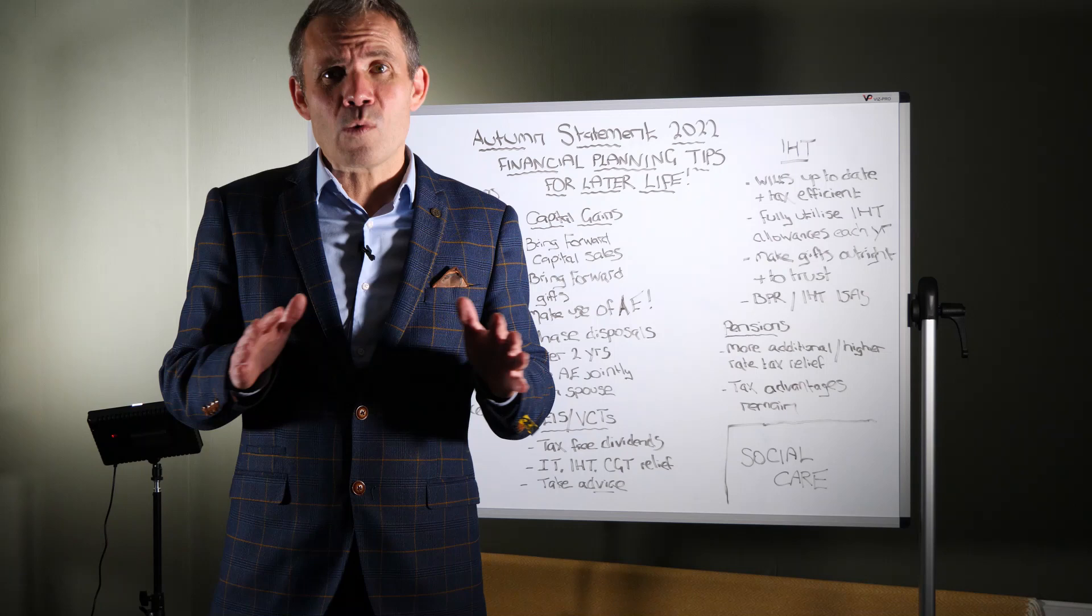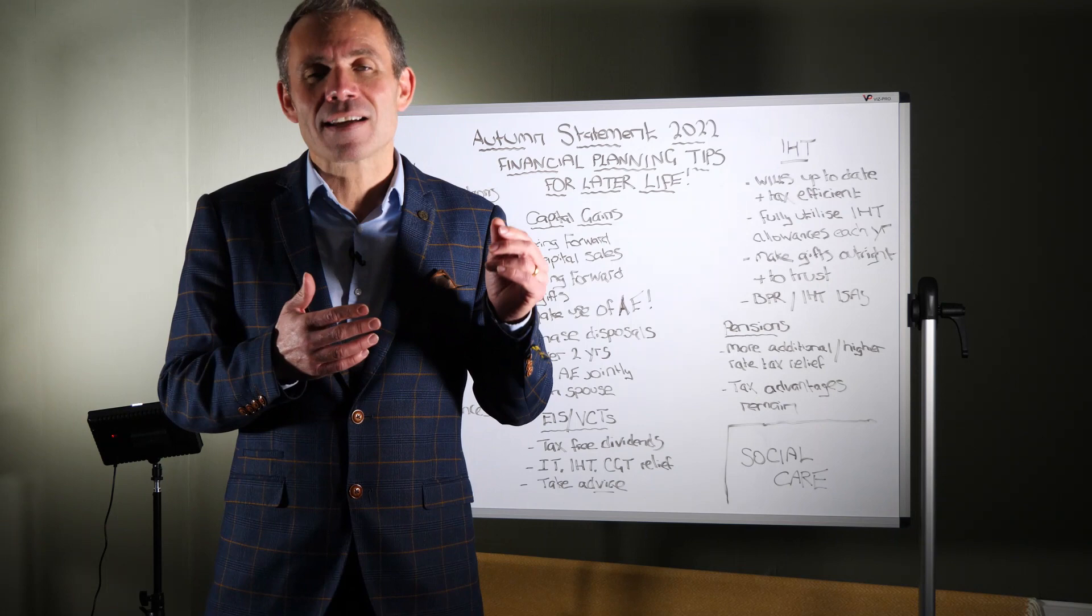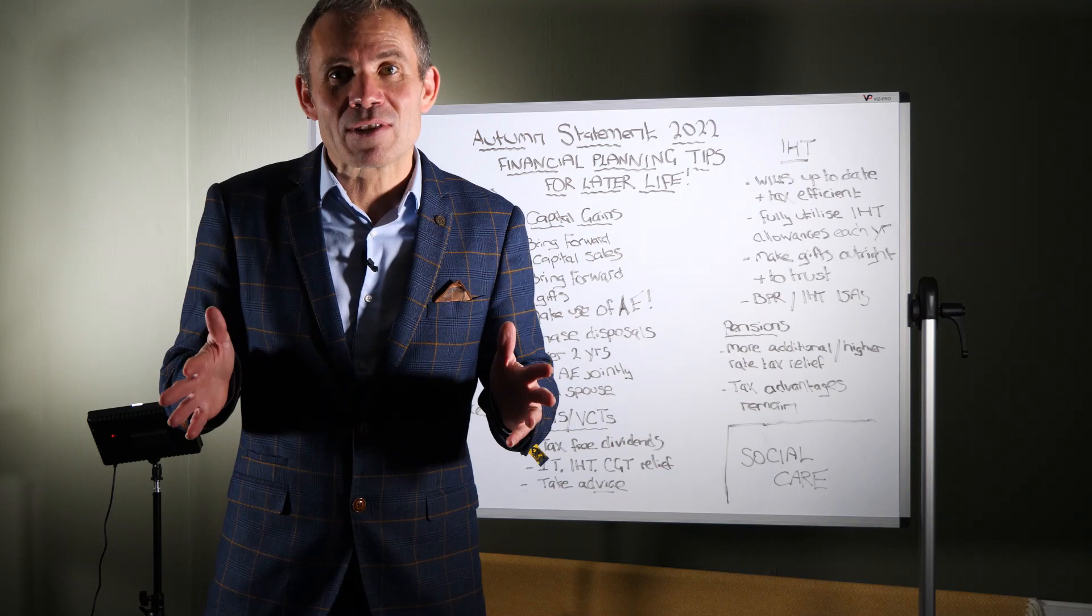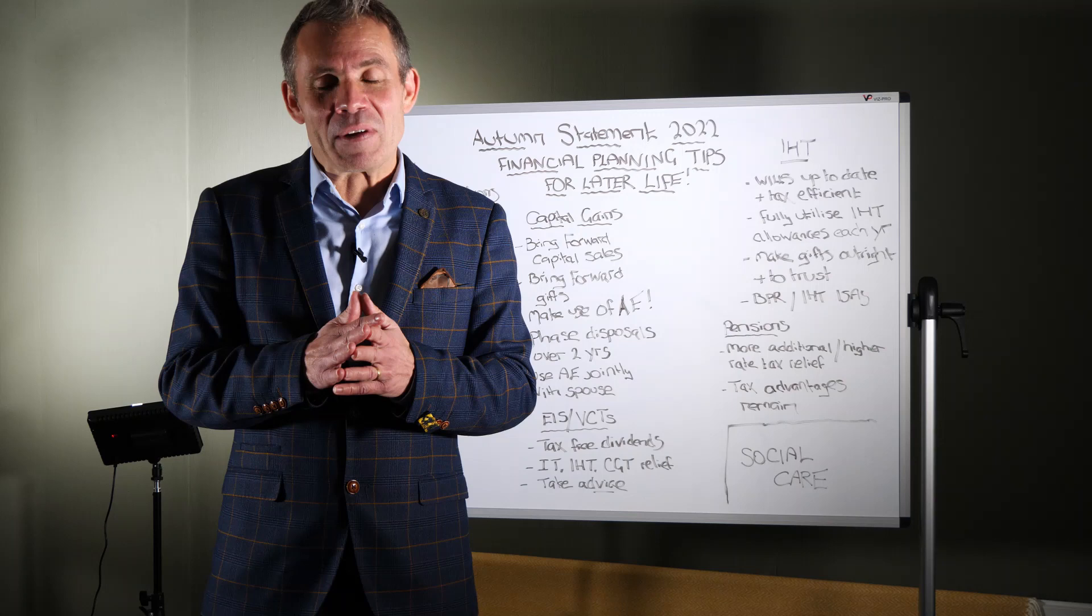First of all, all tax thresholds and bands were fixed for at least another six years. So that was income tax, capital gains, inheritance tax, VAT, all fixed for at least another six years. That means there's going to be a lot more people paying a lot more tax through stealth tax over the next few years as asset prices and incomes rise because of inflation. So that's really bad news over the next few years for people that don't like paying tax.